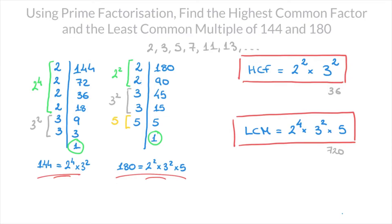And there we have it. That's how we can find the highest common factor as well as the least common multiple of any two whole numbers using prime factorization. And that's it for this tutorial.